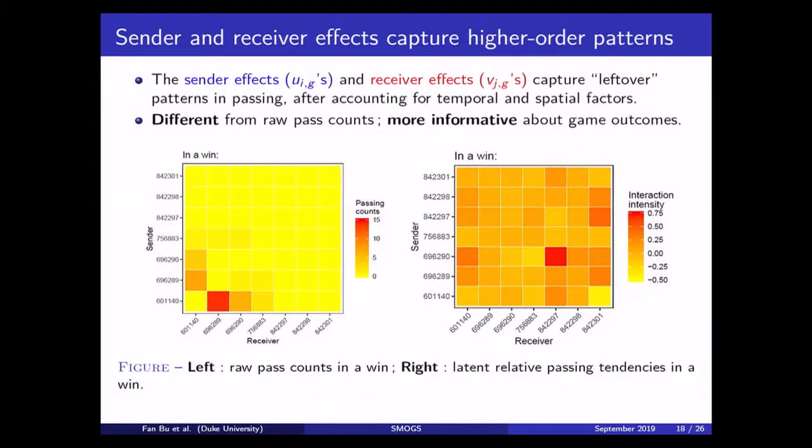I want to emphasize that those latent sender effects and receiver effects are uncovering something different from the raw passing counts. So the left panel is the plot I showed before by simply counting all the numbers of passes made between players. But the right panel is from the slide before. And moreover, as is shown in the last two slides, the sender effects and receiver effects are more informative about the differences between different game outcomes.